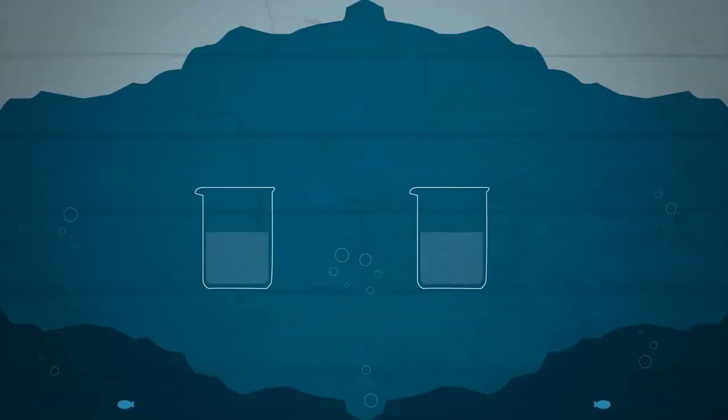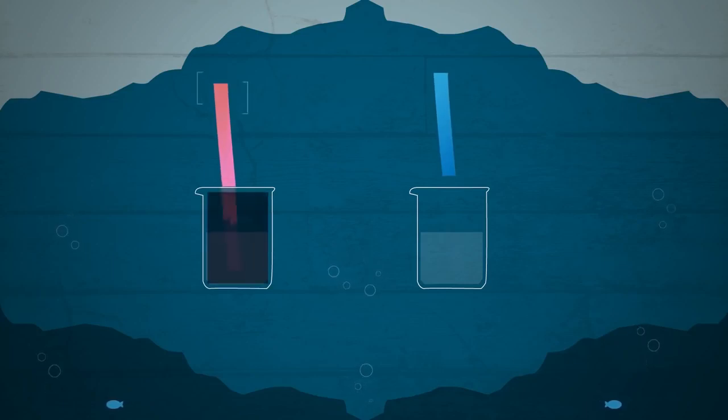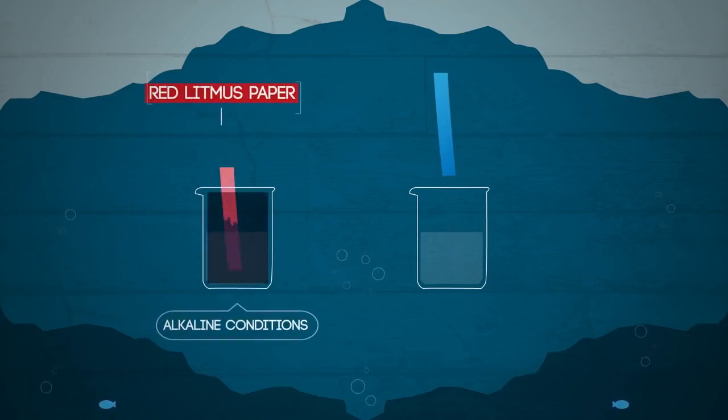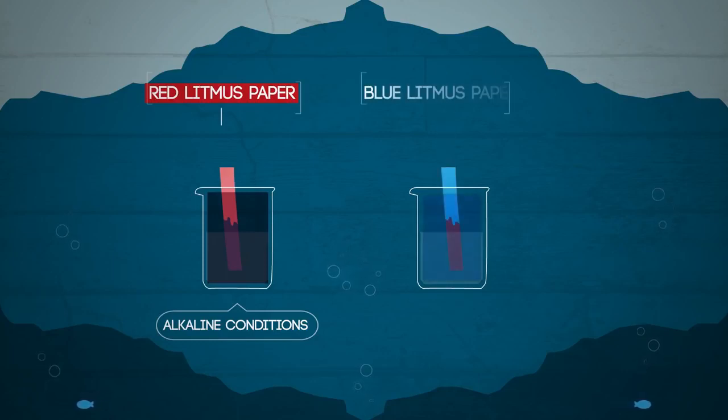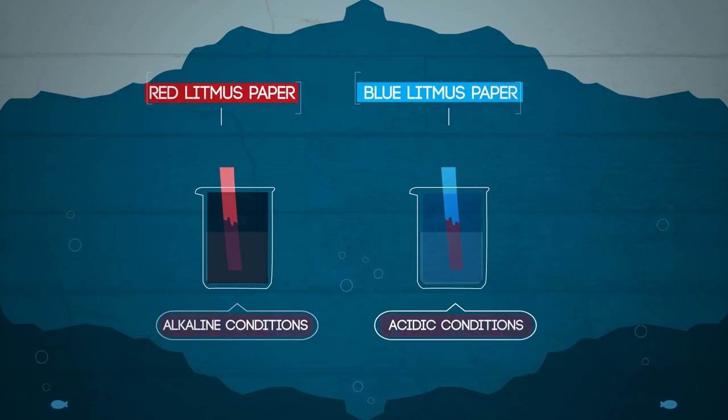It comes as red litmus paper and blue litmus paper. Red litmus paper changes color from red to blue under alkaline conditions but no change under acidic conditions. Blue litmus paper changes color from blue to red under acidic conditions but no change under alkaline conditions. Just remember that red litmus paper changes color for alkalis and blue litmus paper changes color for acids.